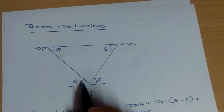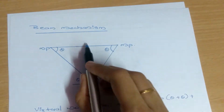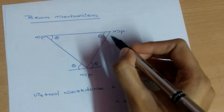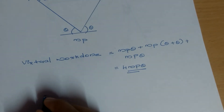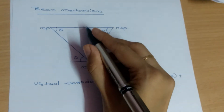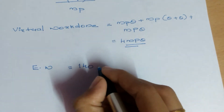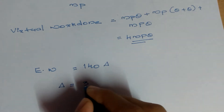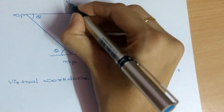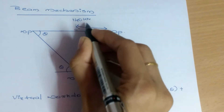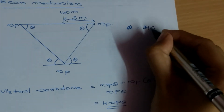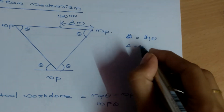If the load were acting at an unequal distance, we would need to consider θ₁ and θ₂ separately. The external work done is equal to the force 140 kN multiplied by the deflection delta. Delta equals 3θ, because the load 140 kN acts at a distance of 3 meters from the end. If the distance were 4 meters, delta would be 4θ; if 5 meters, delta would be 5θ, and so on.